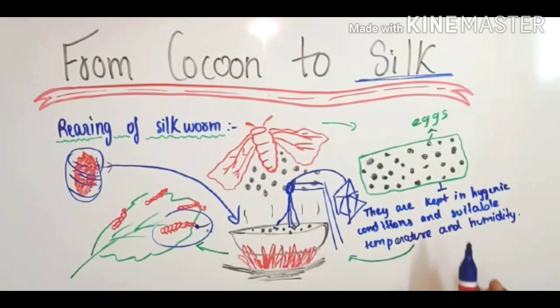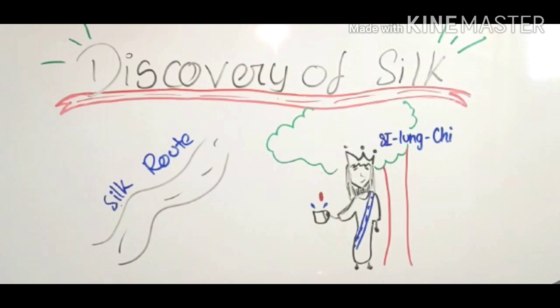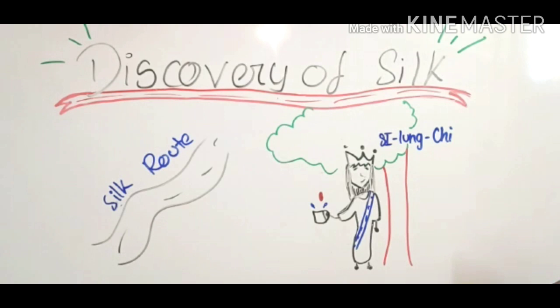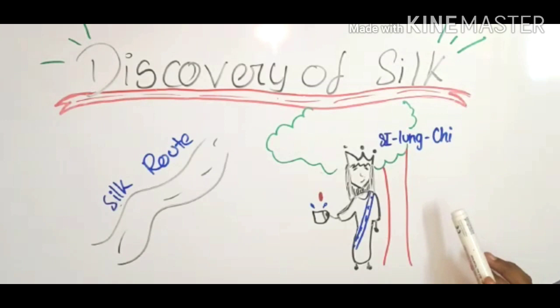That was the cocoon-to-silk process. Now, the discovery of silk: in ancient times, there was a Chinese Empress named Si Ling Chi. She was sent to the royal gardens, where there were many mulberry trees, because the leaves of the trees were being damaged by white-colored worms.